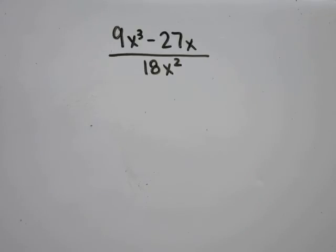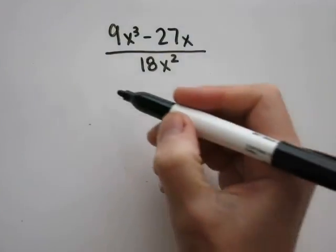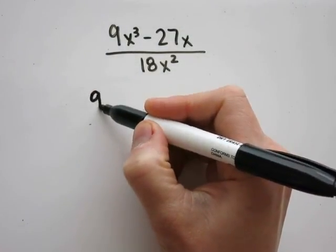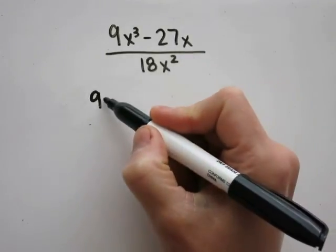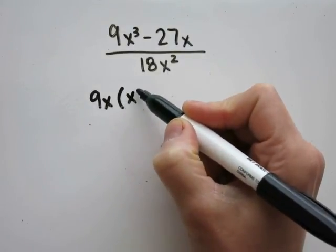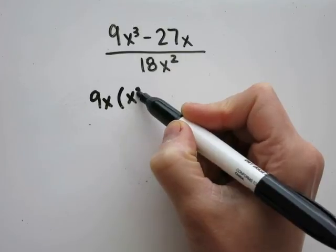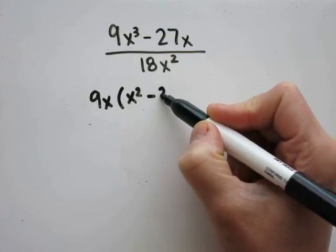Problem 14: 9x cubed minus 27x over 18x squared. Looking at the numerator, 9 and 27 are both divisible by 9, so I can factor out a 9. There's also an x in both terms, so I can factor out an x. We'll leave x squared minus 3, since 27 divided by 9 is 3.